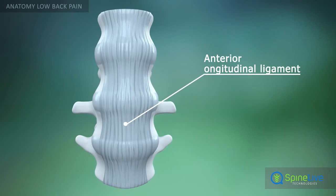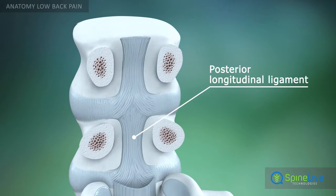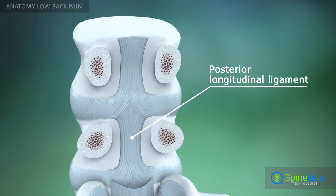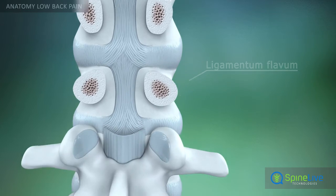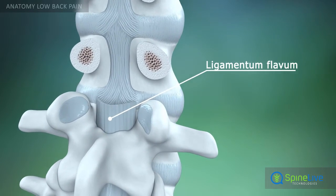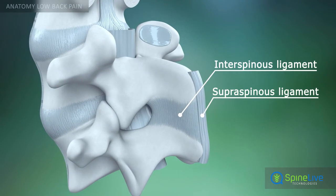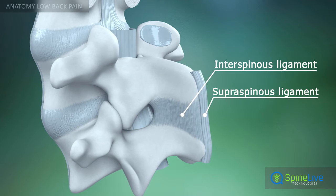There are a number of ligaments in the lumbar region that play an important role in the movements of the spine, hold the intervertebral discs in the right place, and protect the spinal cord.